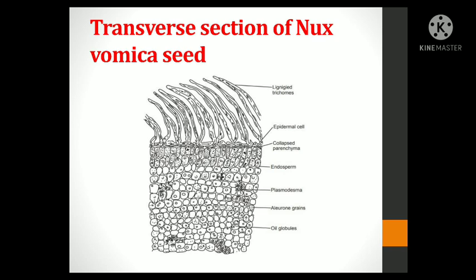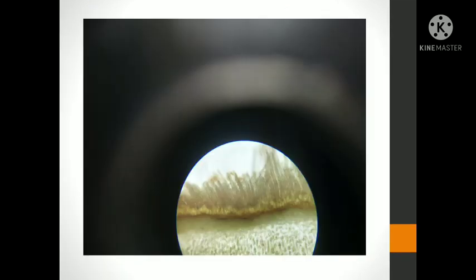The section diagram shows lignified trichomes, and at the base it shows parenchyma, endosperm, plasmodesma, aleuron grains, and oil glands in the endosperm region. This is the actual section diagram under the microscope.